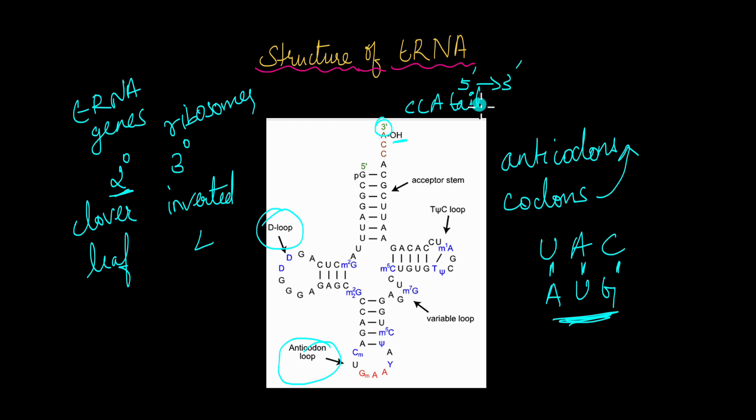So you might be wondering now, we know that there are 64 codons and the codon degeneracy means that 64 codons, sometimes multiple codons code for the same amino acid. Out of these 64 codons, 61 actually code for amino acids and 3 are stop codons. There are no tRNAs for stop codons. But does it mean that there are 61 tRNAs in each cell? The answer is no.